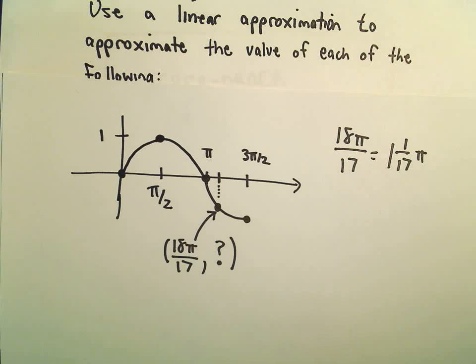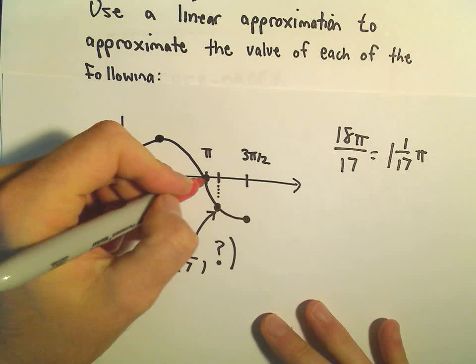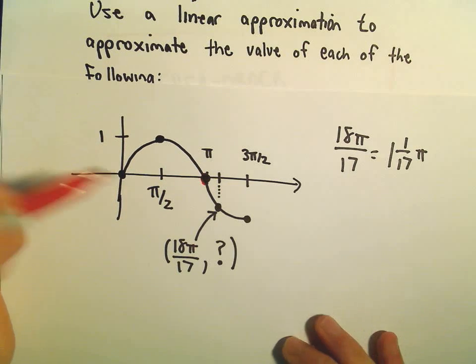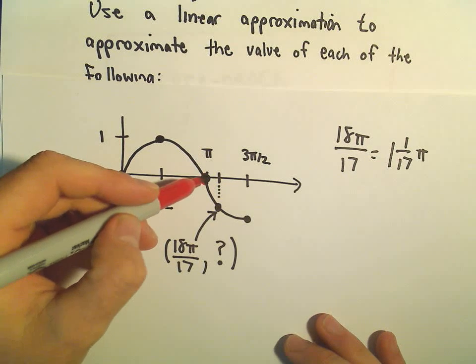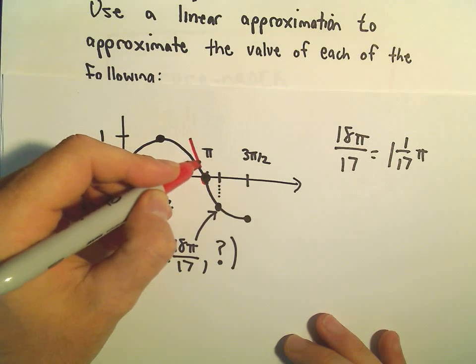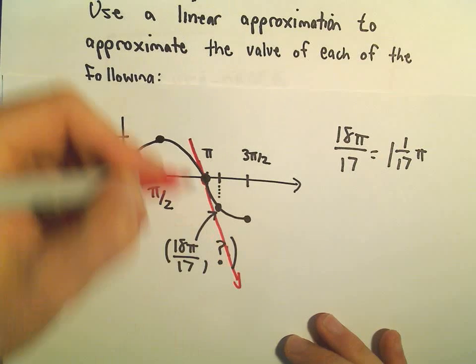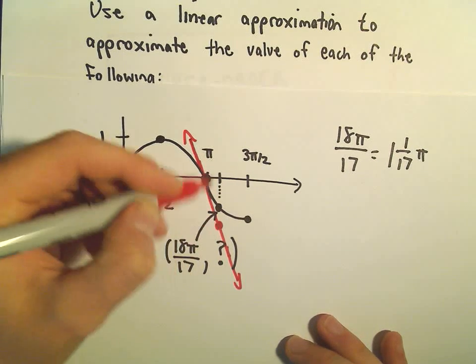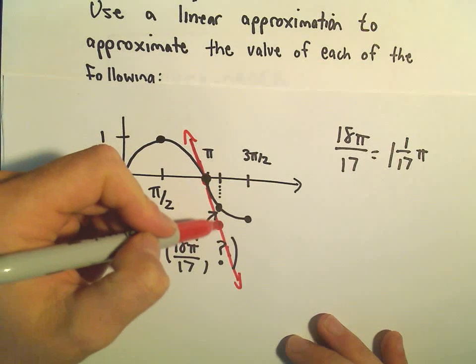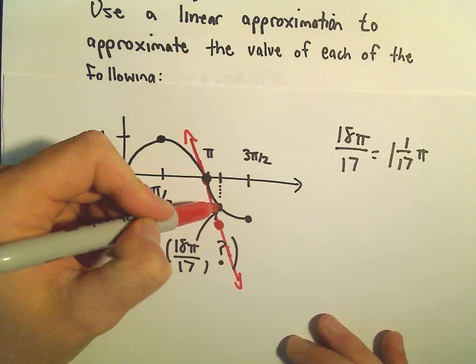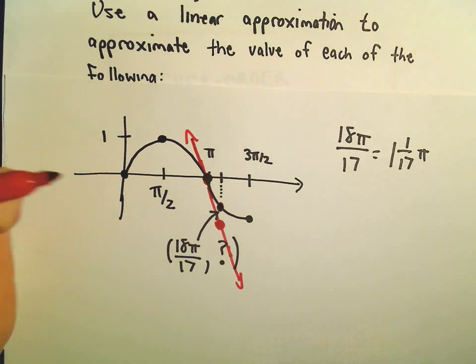So if you had a calculator, of course you would just plug this in. The idea on how to use a linear approximation is we're going to take a point nearby that we can easily evaluate. I know what sine of π is. I'm going to find the equation of the tangent line there. And what I'm going to do is plug that number 18π over 17 into my line, and the idea is the y value on the line is going to approximate the true y value on the curve. Okay, so that's kind of the geometry idea.